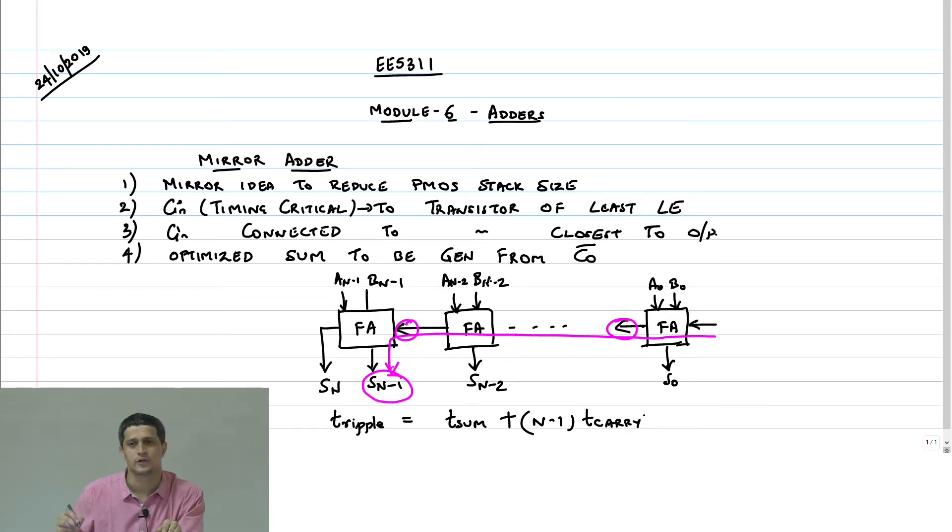So if I want to optimize this path, then I have to make sure that the carry out is fast, the sum can be slow. And that is what we saw when we wrote out the delay expression. Ripple adder we said was T_sum for the last guy plus (n-1) times T_carry. And that is why we chose to optimize T_carry so much rather than sum. So with this we got a very nice circuit implementation in static CMOS logic that you could have good drive strength and all that stuff.